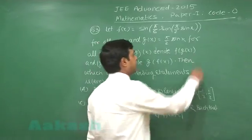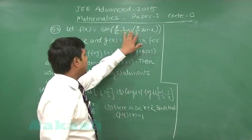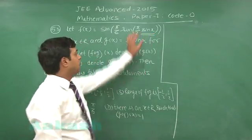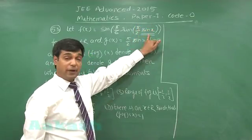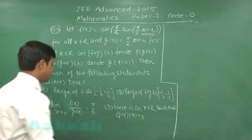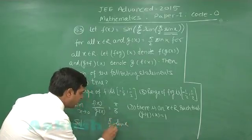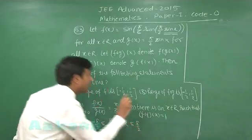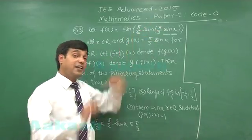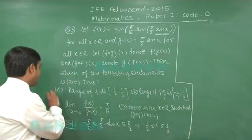Starting with option 1, the range of f. f(x) = sin(π/6 · sin(π/2 · sin x)). The range of sin x is [−1, 1], so π/2 · sin x lies between −π/2 and π/2. Sine of that is again between −1 and 1. Multiplying by π/6 gives a range of −π/6 to π/6, which means f is between −1/2 and 1/2. So option 1 is correct.